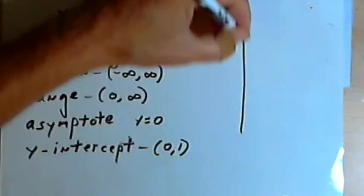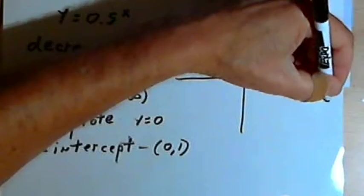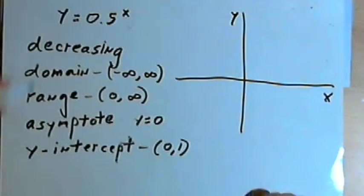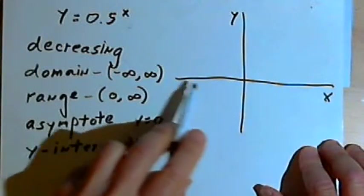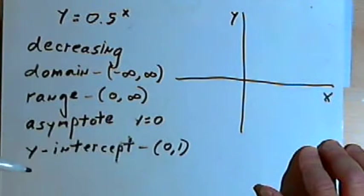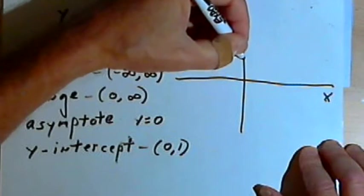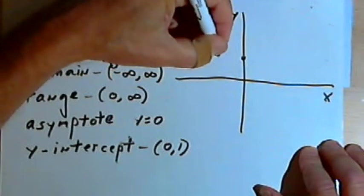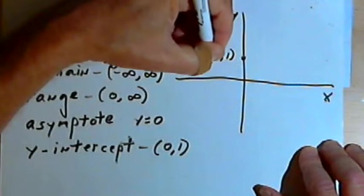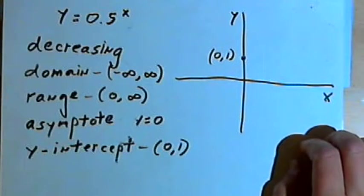Let's take that information and just do a rough graph. We know where the horizontal asymptote is. That's along the x-axis. We know we've got a point at 0, 1. And if we had another point, we could probably sketch this graph.